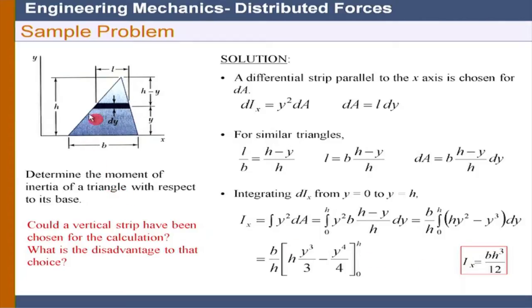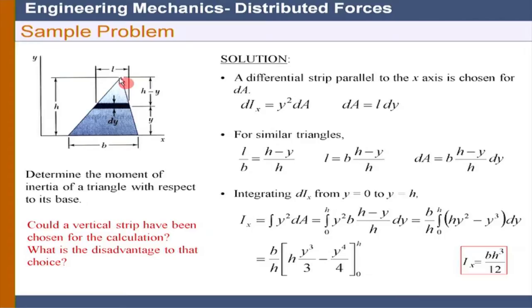Could a vertical strip have been chosen for the triangle calculation? In that problem, if we choose a vertical strip, we could get the moment of inertia of the vertical strip about its base as one-third dx y cubed, but there is a discontinuity in y as we reach the apex. In the integration we would have to break the limits into two parts, creating a major disadvantage compared to using the horizontal strip.